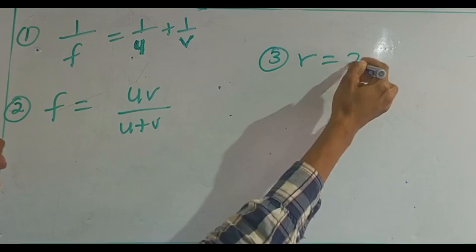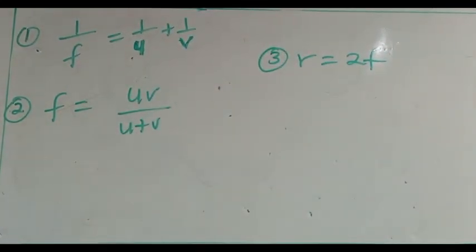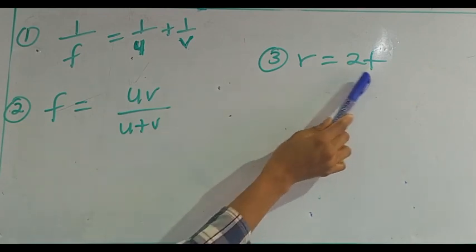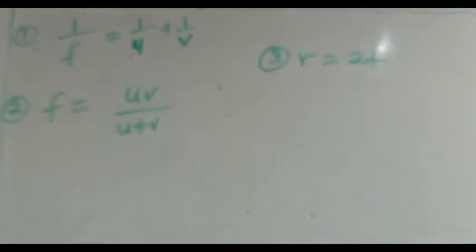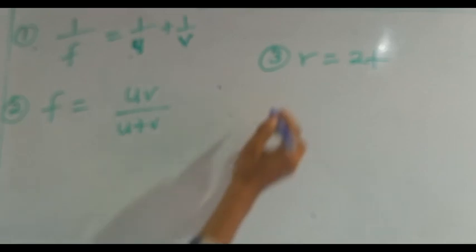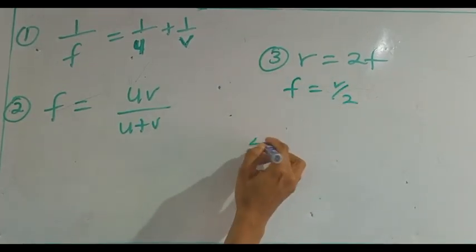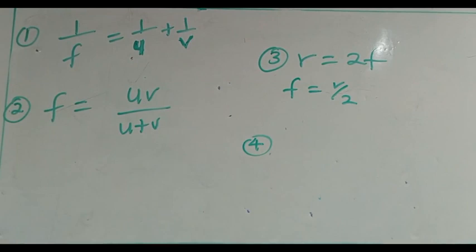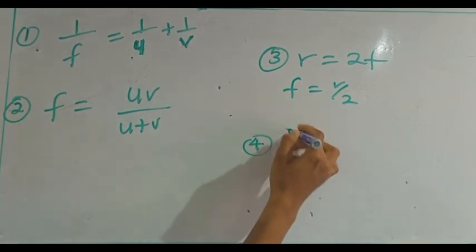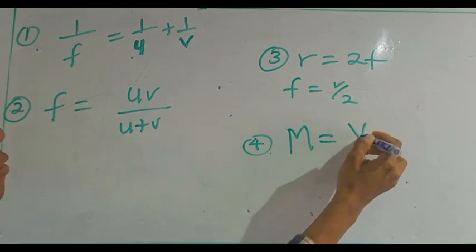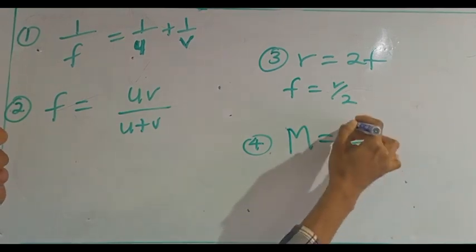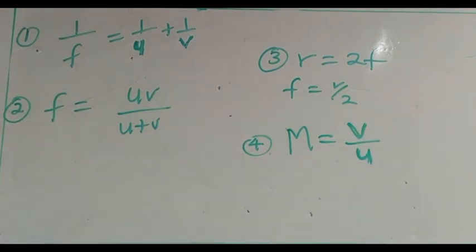Another thing you need to know: the radius of curvature r is equal to 2f — two times the focal length. So r = 2f, and when you are looking for f, it will be r over 2. The fourth formula is magnification: m = v / u, that is image distance over object distance.